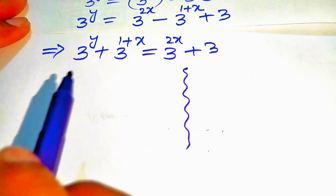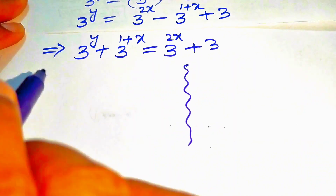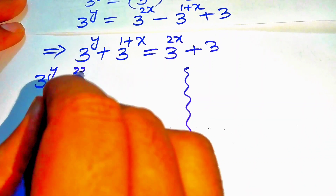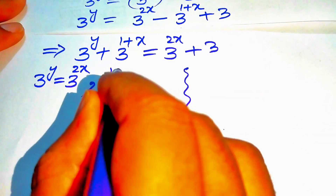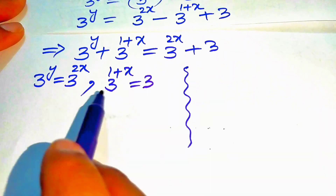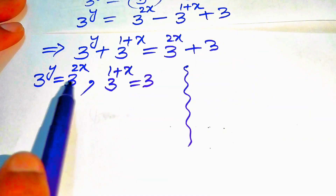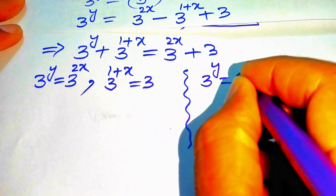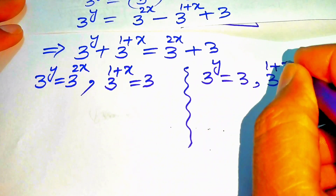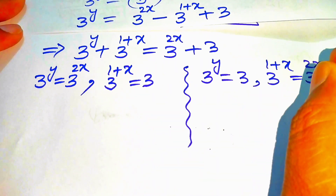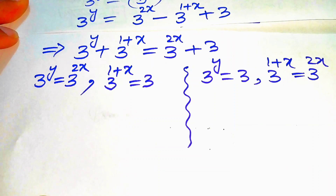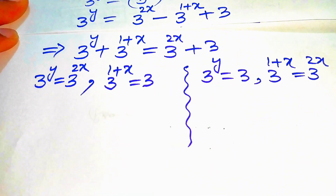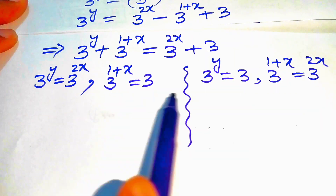Comparing both sides, in case 1 we assume 3 to the power of y equals 3 to the power of 2x and 3 to the power of 1 plus x equals 3. In case 2 we take 3 to the power of y equals 3 and 3 to the power of 1 plus x equals 3 to the power of 2x.